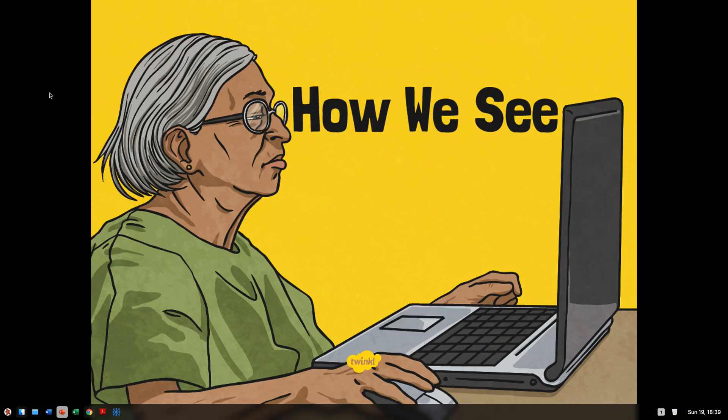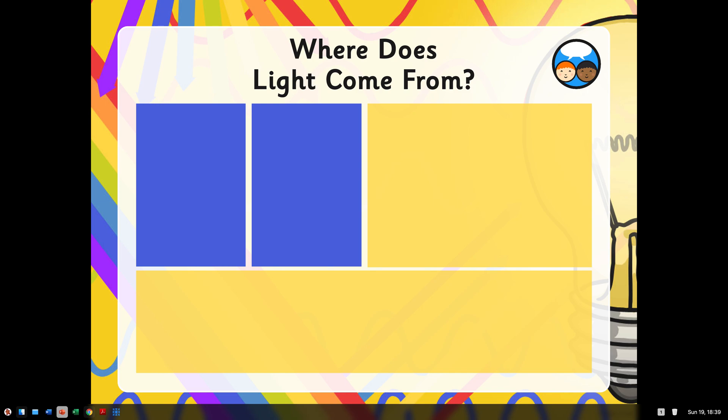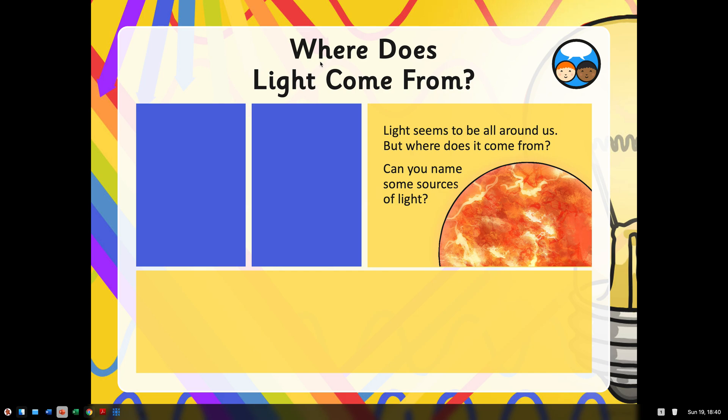We're going to be looking at how we see today using light. Where does light come from? Light seems to be all around us, but where does it come from? Can you name any sources of light? Well, the most obvious source of light, the natural source of light, is the sun.